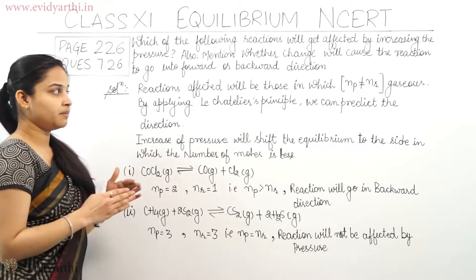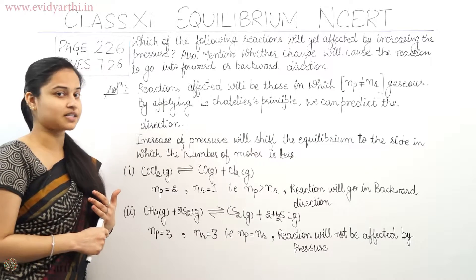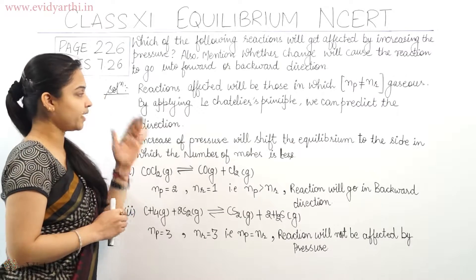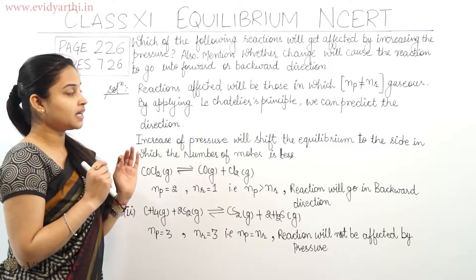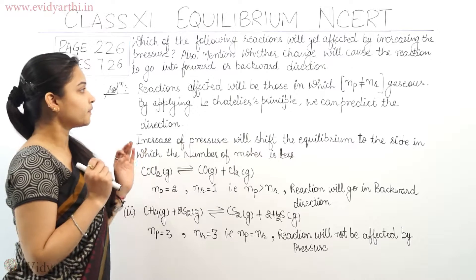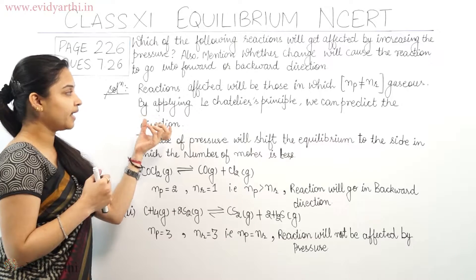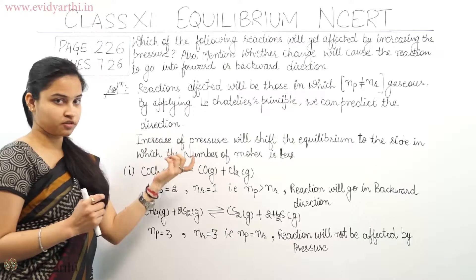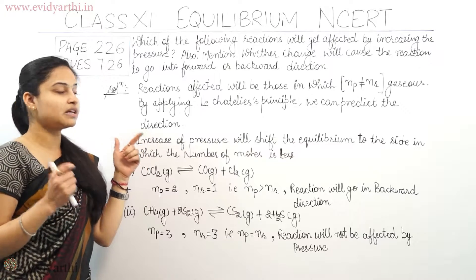Reactions affected will be those reactions in which the number of moles of products is not equal to the number of moles of reactants — that is, Np not equal to Nr, where Np means number of moles of products and Nr means number of moles of reactants (gaseous species only). By applying Le Chatelier's principle, we predict the directions. Increase of pressure will shift the equilibrium to the side in which the number of moles of gaseous species is less.